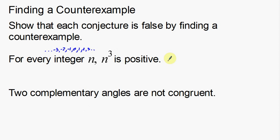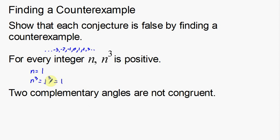Let's do a couple of examples and try to figure this out. If n equals 1, then n to the third is 1 to the third, which equals 1 — since 1 times 1 times 1 is 1. So n to the third is positive. That's not a counterexample; that's just an example that makes it true. I want an example that makes it false. So 1 is a small number — let's try something a little bit larger.